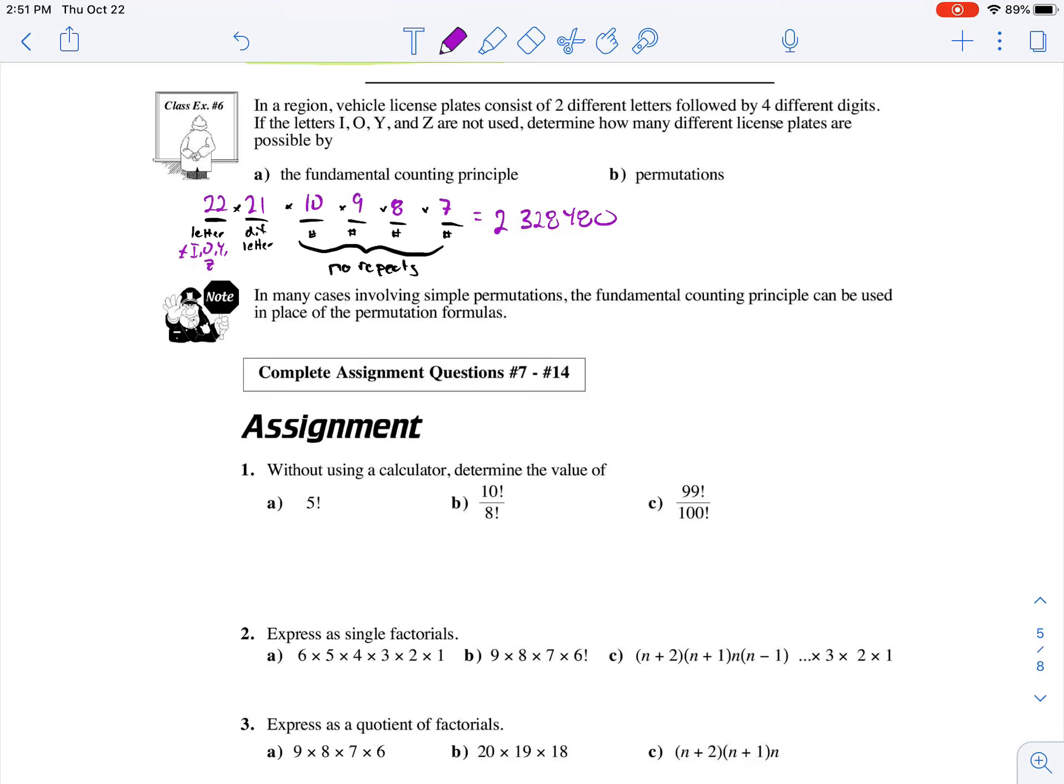Now, using permutations, we can break this problem down into figuring out how many letters there are, and then how many digits there are. So to figure out the arrangement of the two letters, the two different letters, well, there were 22 elements, and we are taking only two of them at a time. Then we'll multiply that by the digits. Well, there are 10 digits, and we are taking four of those at a time. If you calculate this, it still is going to equal 2,328,480. Thank you.